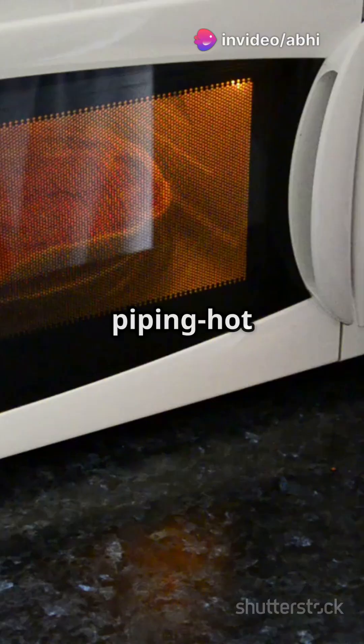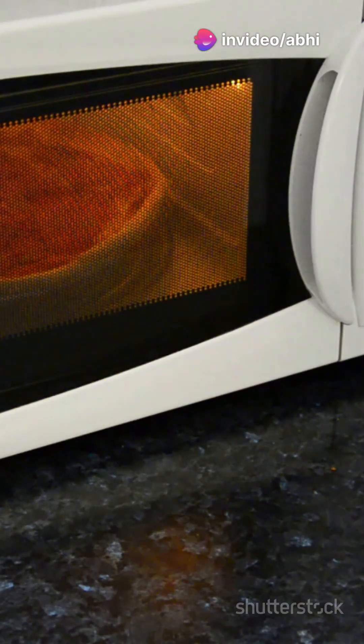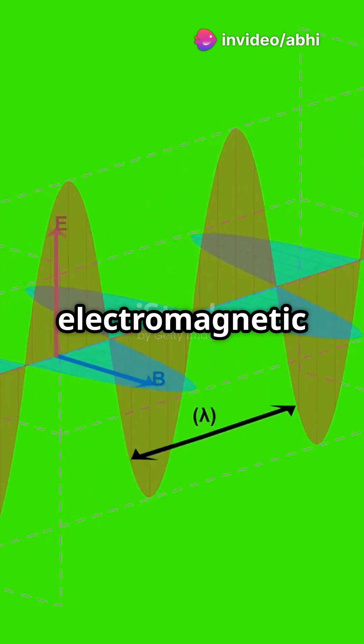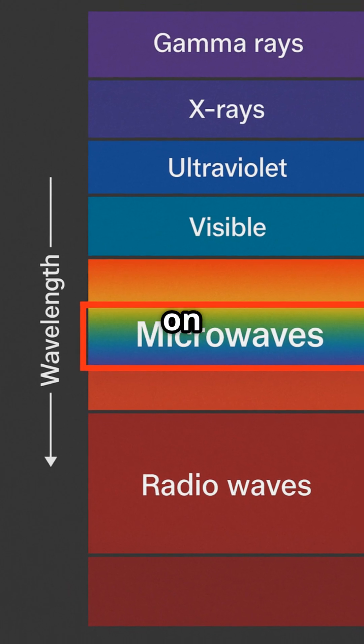How does your microwave turn cold pizza into piping hot goodness in just seconds? Microwaves are a type of electromagnetic wave, sitting right between radio and infrared on the spectrum.